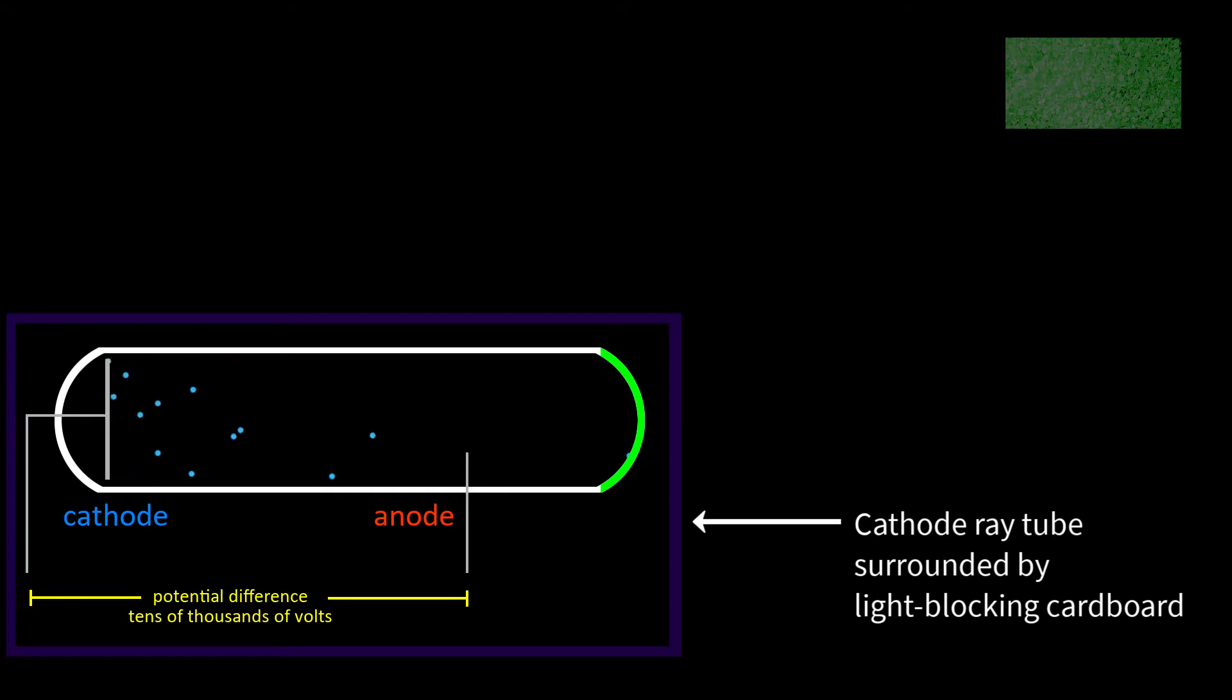The glow couldn't be caused by cathode rays—they were contained within the tube. It couldn't be UV light—the room was dark and the tube was covered. Every time the high voltage caused cathode rays to flow in the tube, the barium platinocyanide glowed.